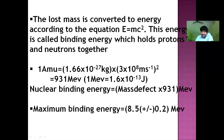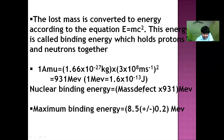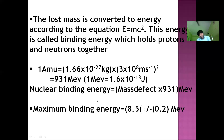Nuclear binding energy equals the mass defect multiplied by 931 MeV. The maximum binding energy permitted per nucleon is 8.5 plus or minus 0.2 MeV.